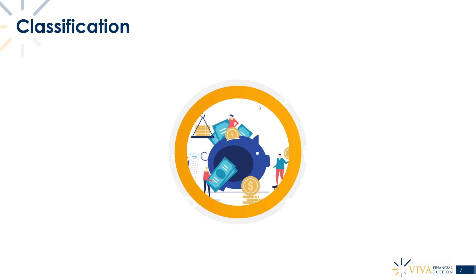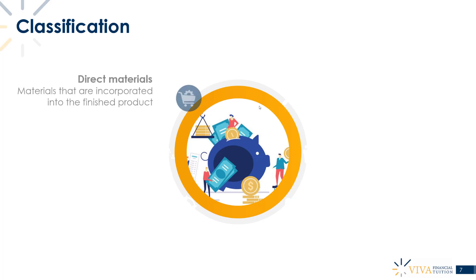The first classification is direct materials — the raw materials that are incorporated into the product. In a smartphone factory producing touchscreen phones, the raw materials include items like batteries, the screen, and all the screws used to keep the phone together. Those are examples of direct materials; they're directly used in the production process.